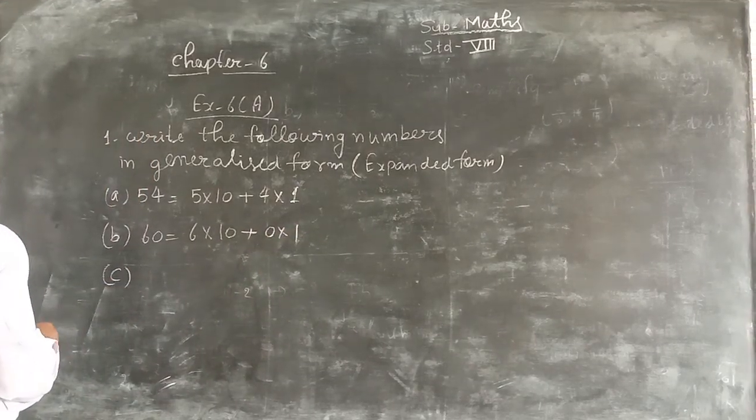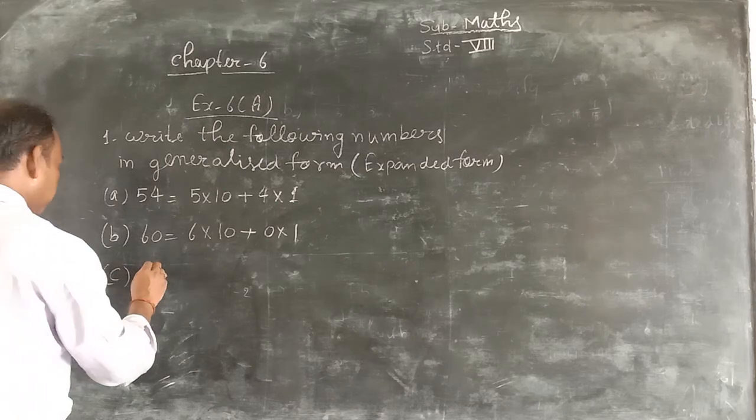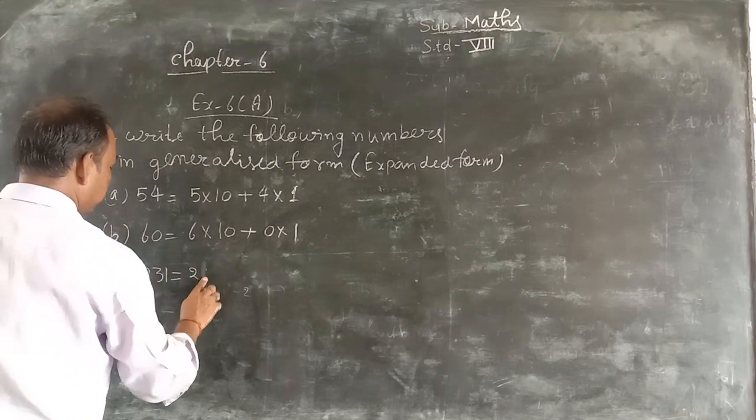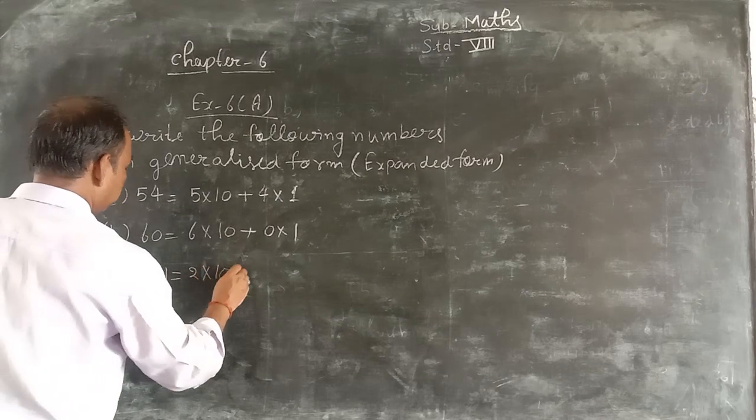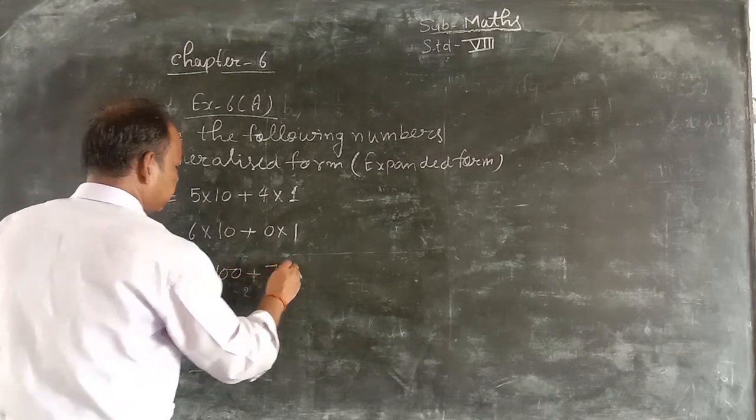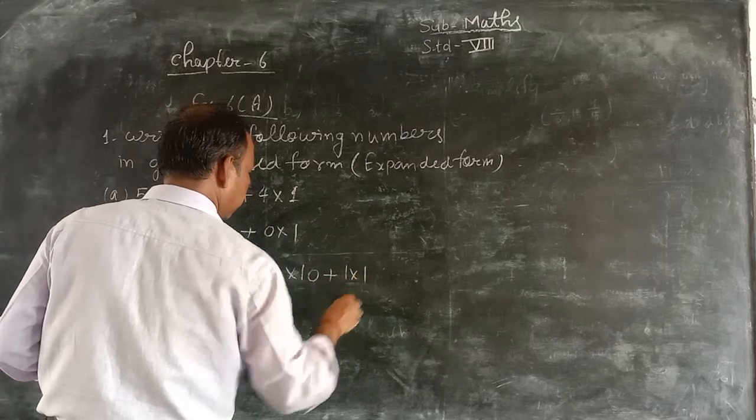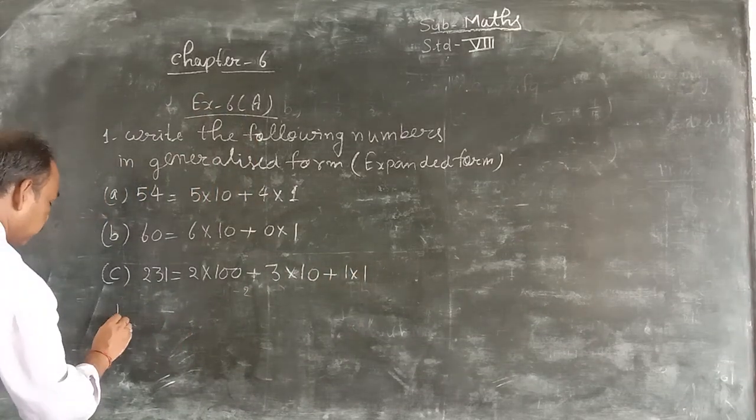Part number c, 231. 2 multiply 100 plus 3 multiply 10 plus 1 multiply 1.